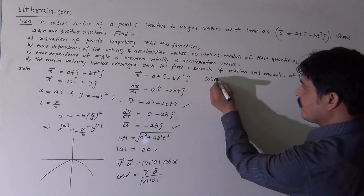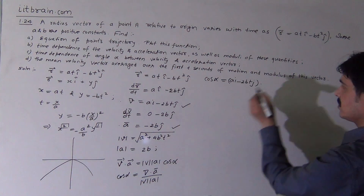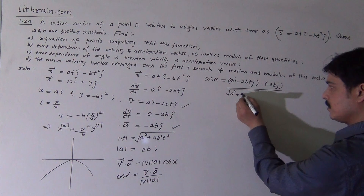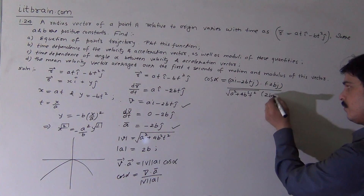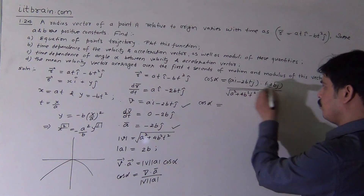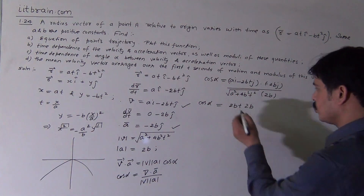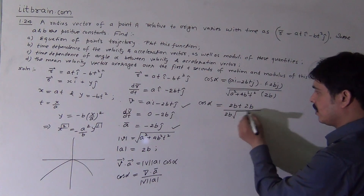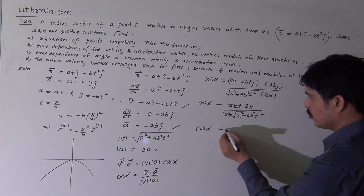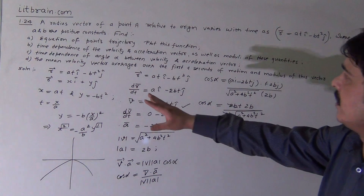The dot product gives: (a·î - 2bt·ĵ)·(-2b·ĵ). Since î·ĵ = 0 and ĵ·ĵ = 1, the result is (-2bt)·(-2b) = 4b²t. Dividing by |v|·|a| = √(a² + 4b²t²)·2b, and cancelling 2b, we get cos(alpha) = 2bt / √(a² + 4b²t²). This is the time dependence of the angle alpha between velocity and acceleration.